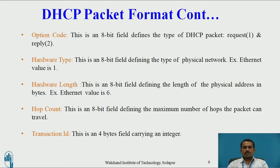Ethernet refers to a type of cable. The different types of cables in Ethernet are 10Base2, 10Base5, 10BaseF, and 10BaseT — four different types of physical cables used for transmitting packets from one device to another. Next is hardware length. This is an 8-bit field defining the length of the physical address in bytes. For example, Ethernet value is 6. Hop count is an 8-bit field defining the maximum number of hops the packet can travel from one device to another. Transaction ID is a 4-bit field carrying an integer that counts how many transactions occur on both the client side and server side.